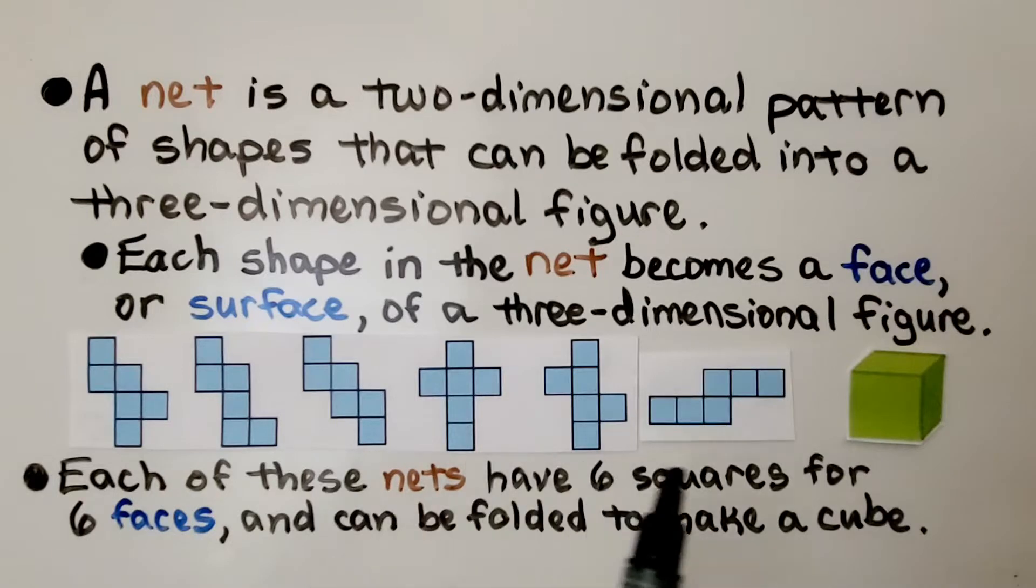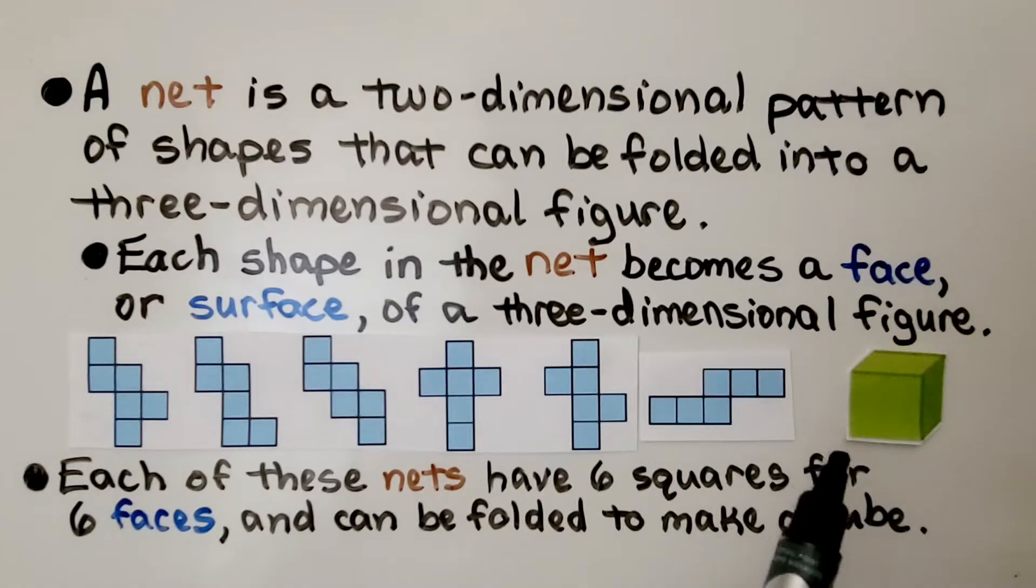Each of these nets have six squares for six faces and can be folded to make a cube.